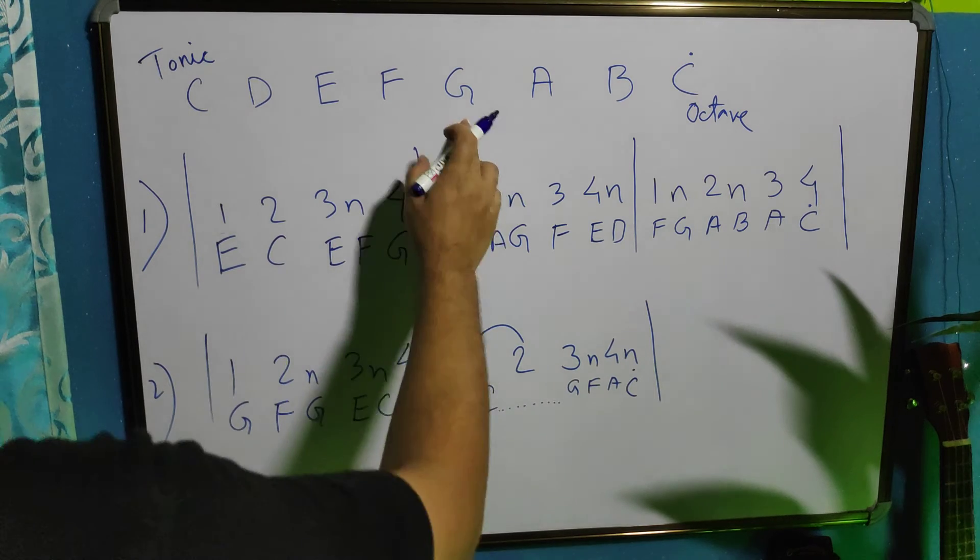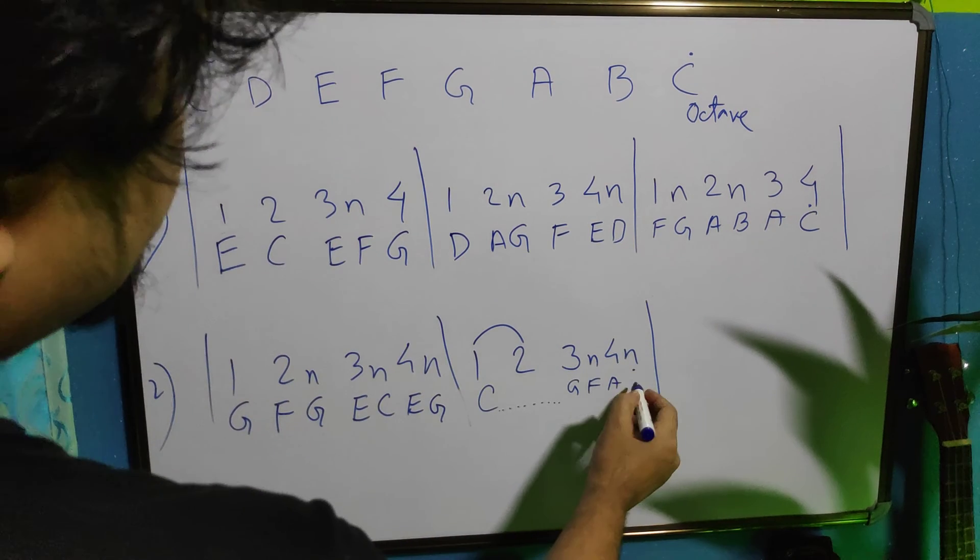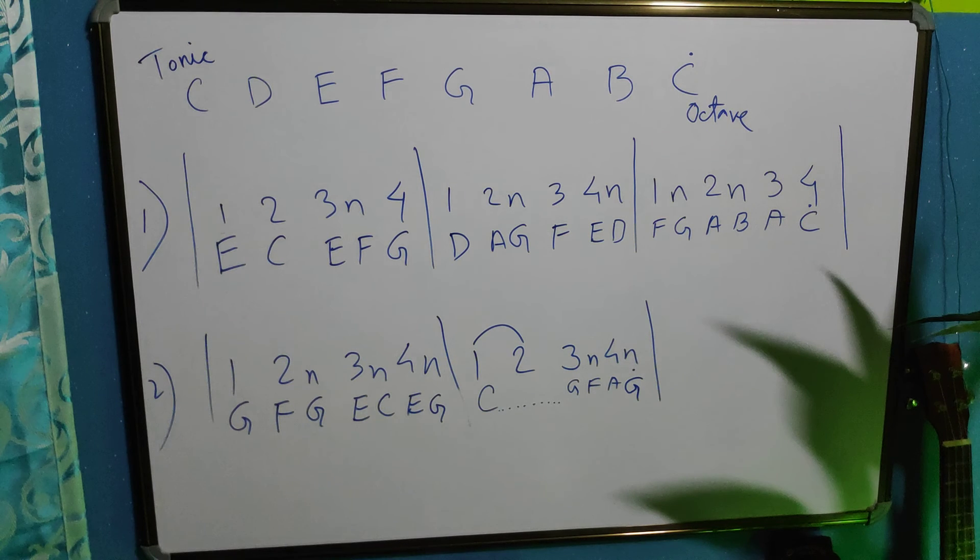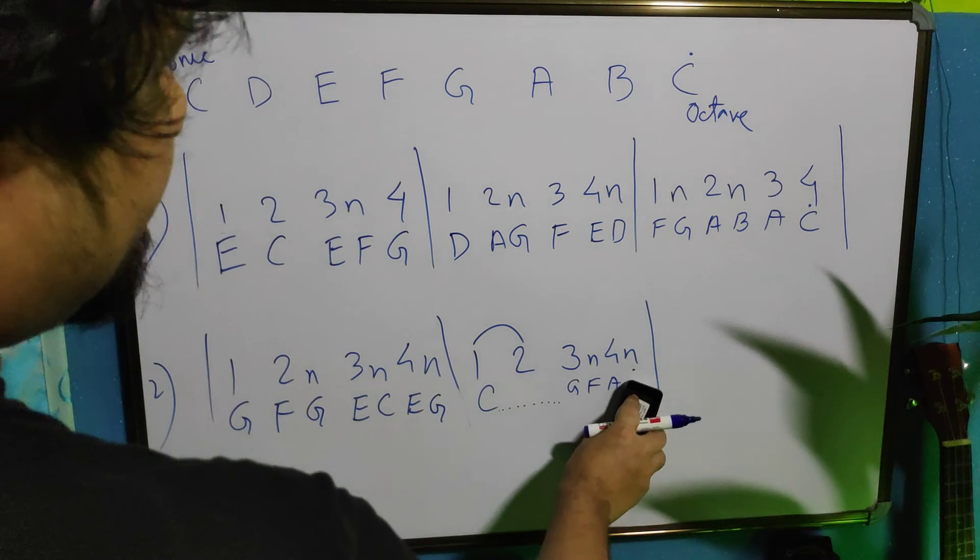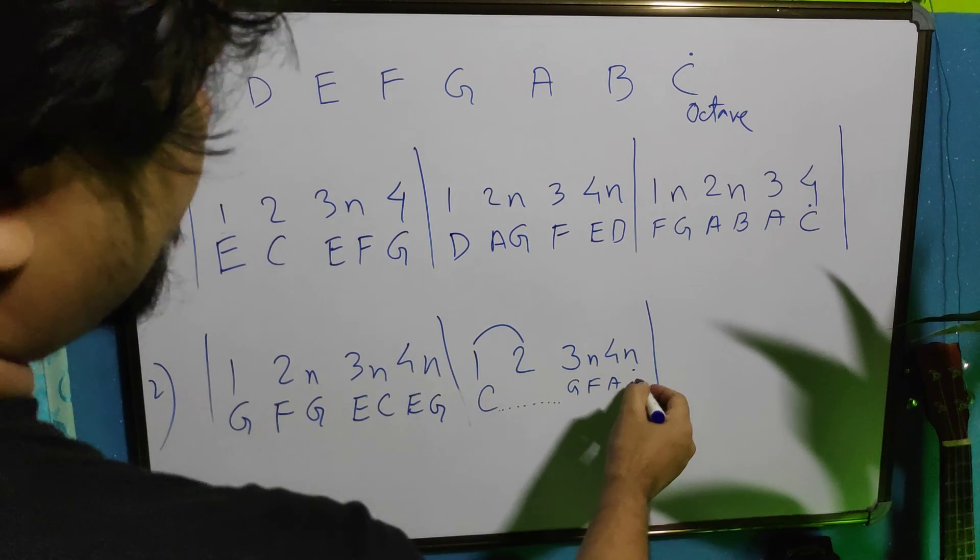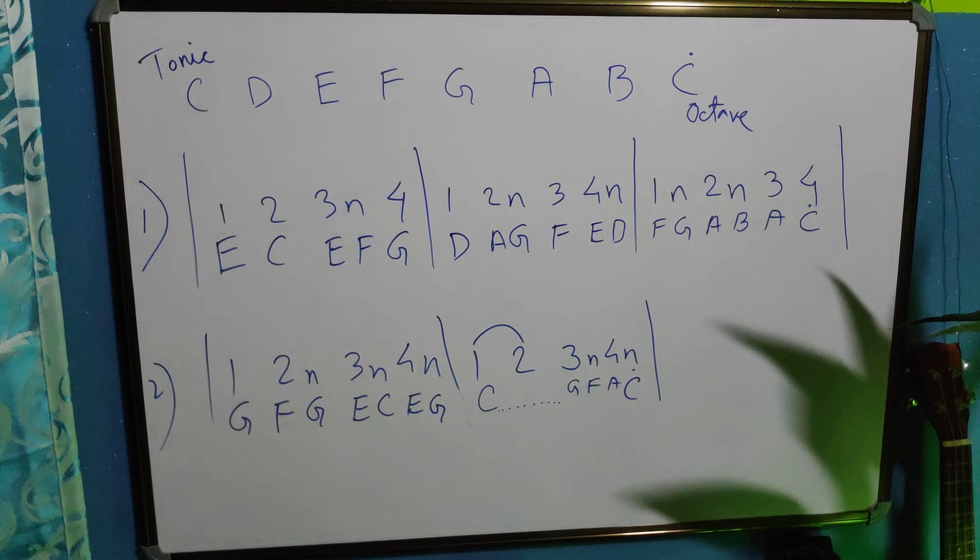Sometimes, even it might be G. Instead of C, it might be G. Then, also it will sound something like an ending. This ending is called cadence. And there are different types of cadence. But, mostly we will try to end in C for now. In a beginner simple style.